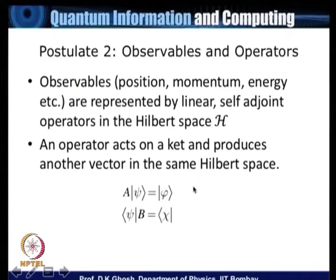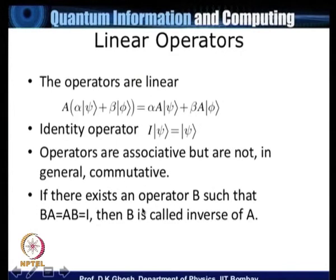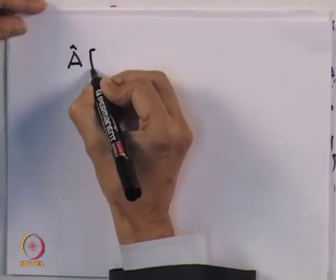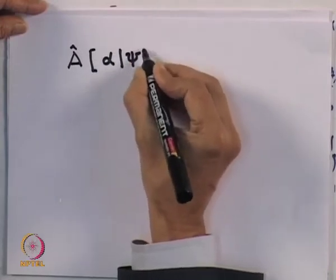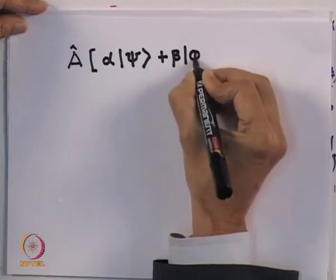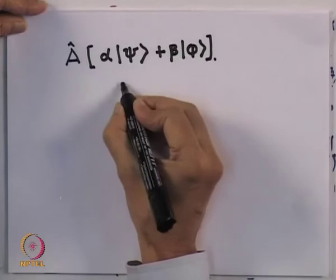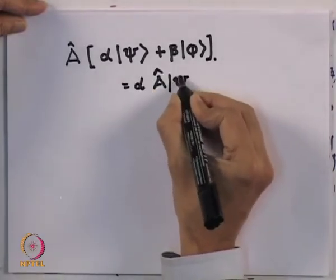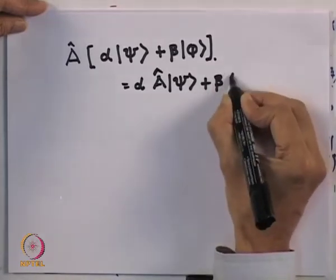We can do the corresponding linear operation in the bra space: an operator B acts to its left on a vector in the dual space giving another vector in the same dual space, so the relationship is identical. Linear operators mean that an operator A acting on a linear superposition α|ψ₁⟩ + β|ψ₂⟩ — where α and β are complex numbers — gives α times A|ψ₁⟩ plus β times A|ψ₂⟩.